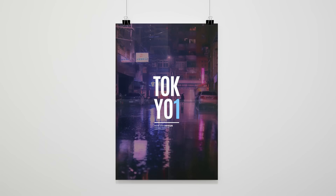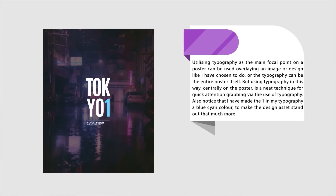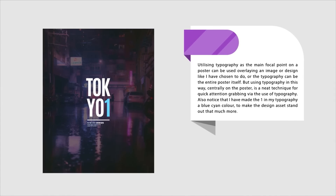Lastly, we have the approach of placing typography in the dead center of your poster design. This is another use of focal point, and I love this approach because it can be very useful for creating interest and pulling in the viewer's attention. Typography as the main focal point can be used on overlaying imagery or just a standalone design, and the typography can also be the entire poster design itself. Notice that I've made the 'one' in my typography a blue cyan color to make the focal point stand out more and create more interest.